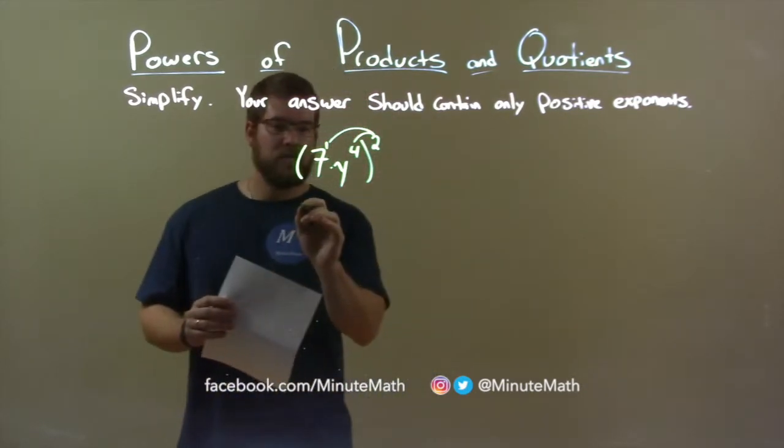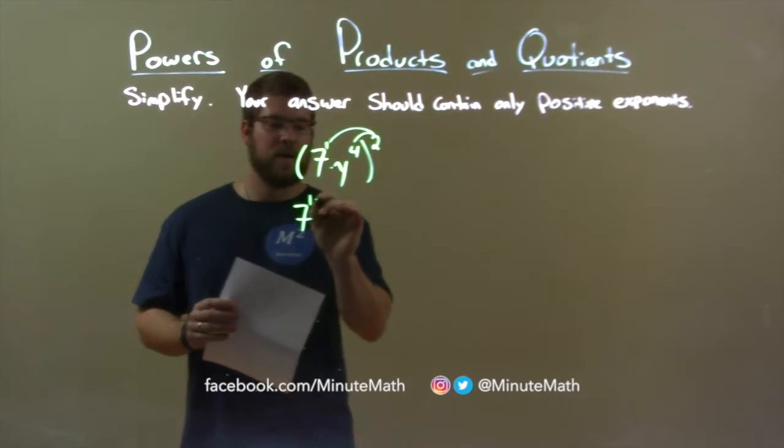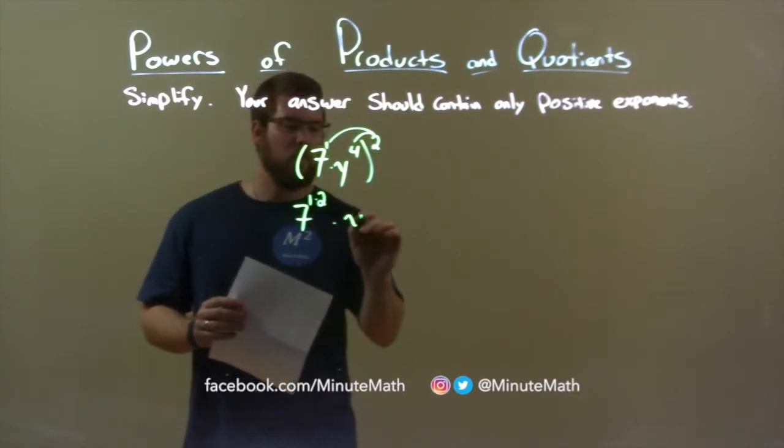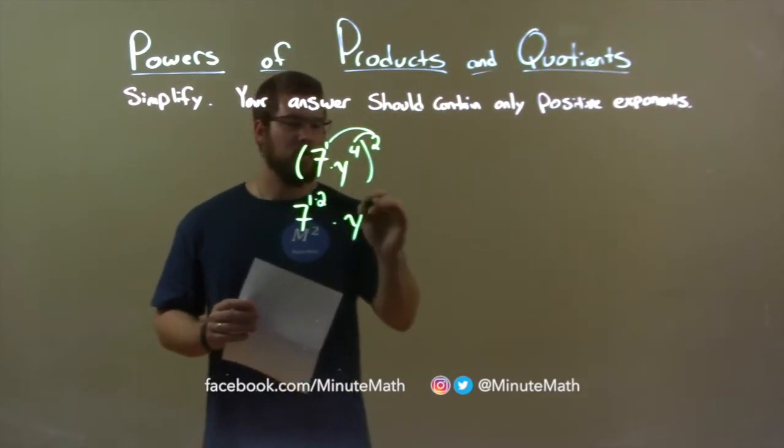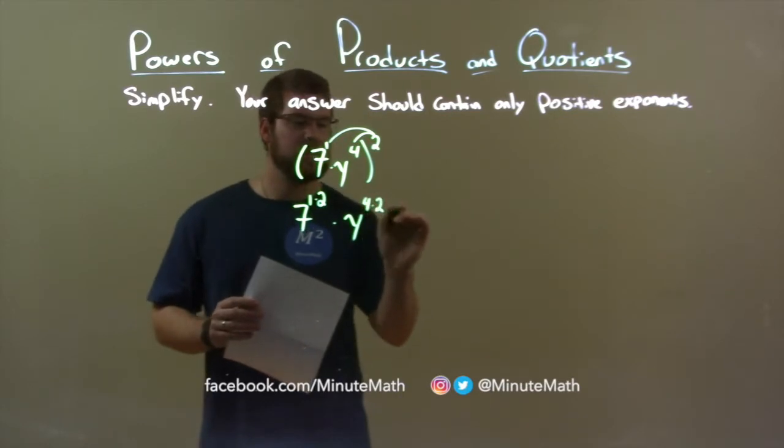So, 7 to the first power is 7, now to the 1 times 2 power, and the y here, instead of y to the fourth, is 4 times 2 in the exponent.